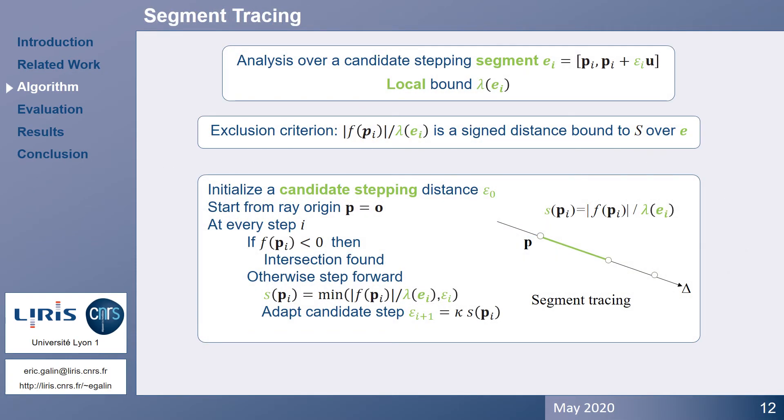We first initialize a candidate stepping distance epsilon. At every iteration, we analyze the field function f over a candidate segment and compute the corresponding local Lipschitz bound. We then compute the stepping distance as a minimum between the candidate stepping distance and the Lipschitz stepping distance f over lambda. Taking the minimum guarantees not to move further than the candidate distance for which we analyze the field function. At the end of every iteration, we update the length of the candidate segment and we will comment on this coefficient later.